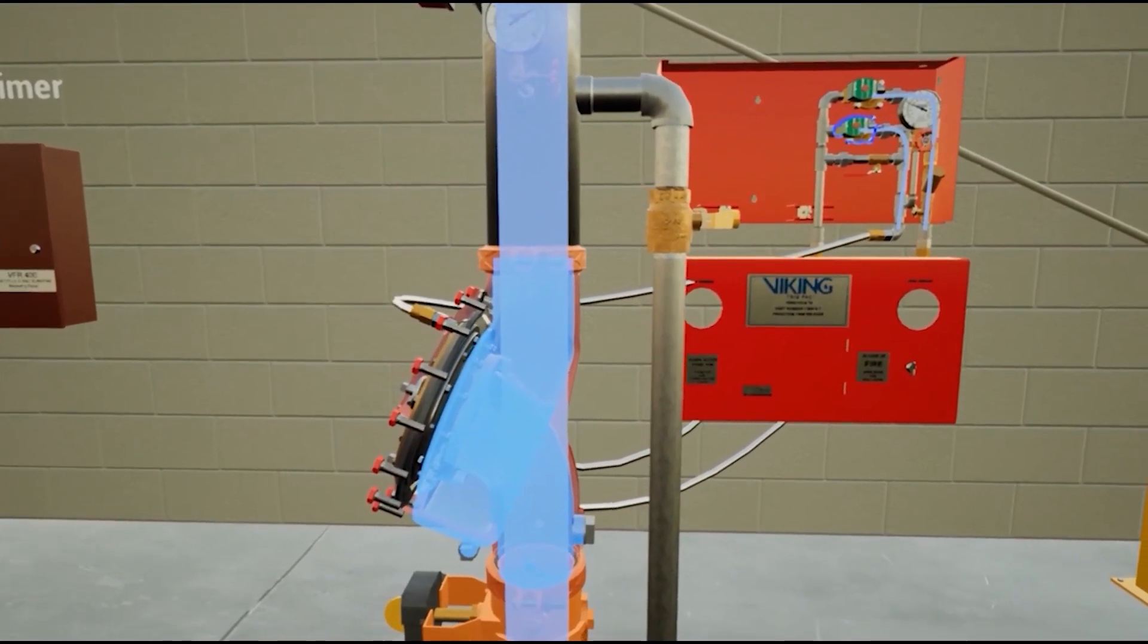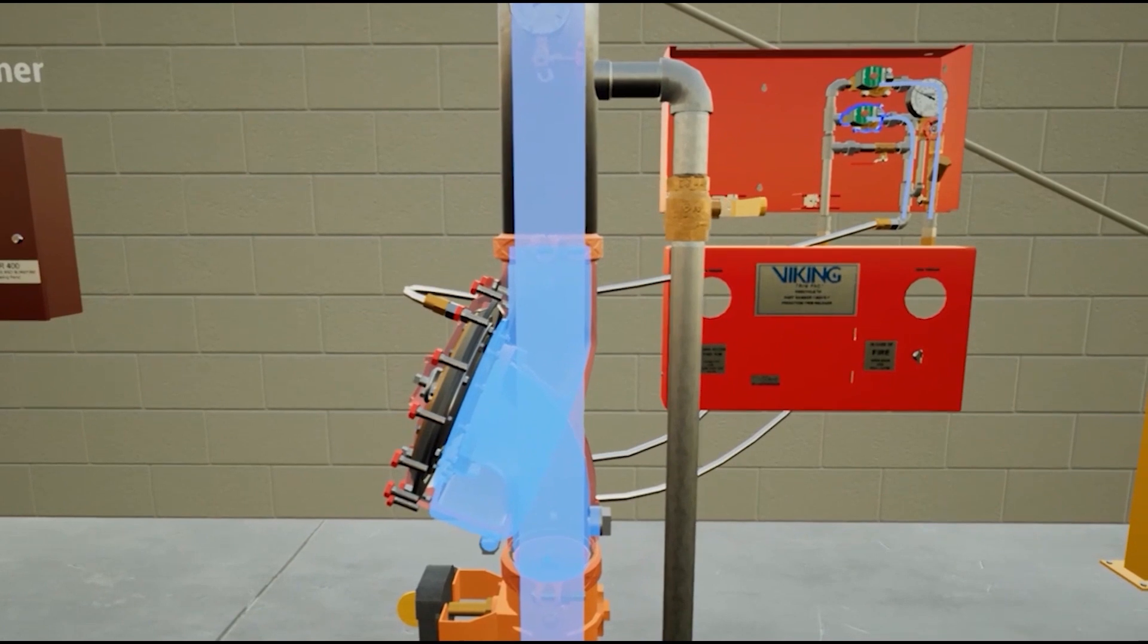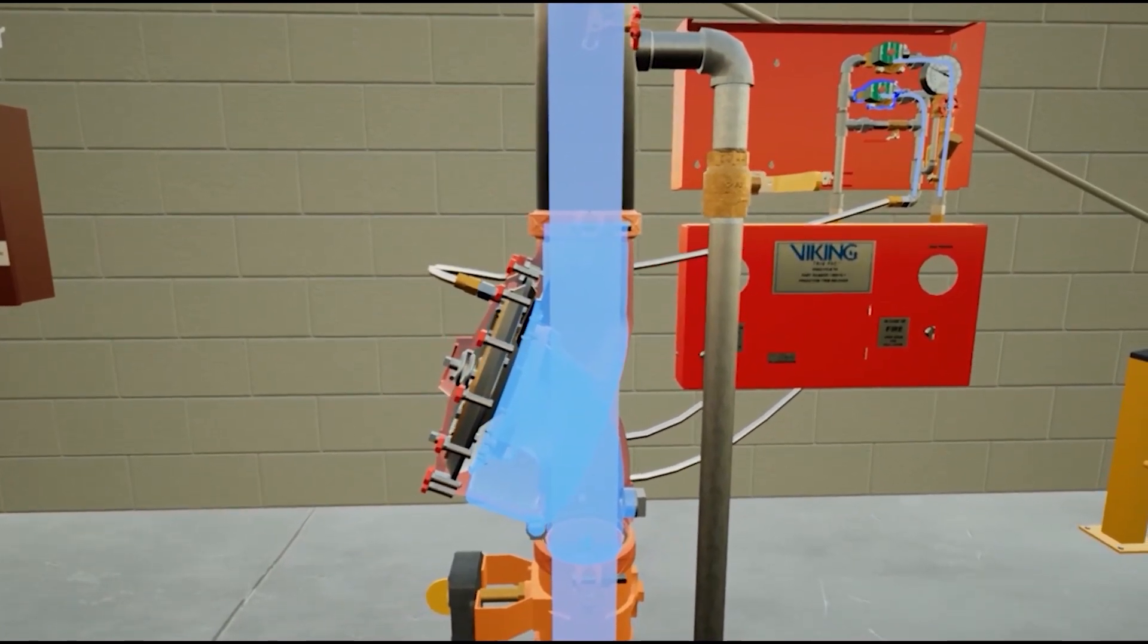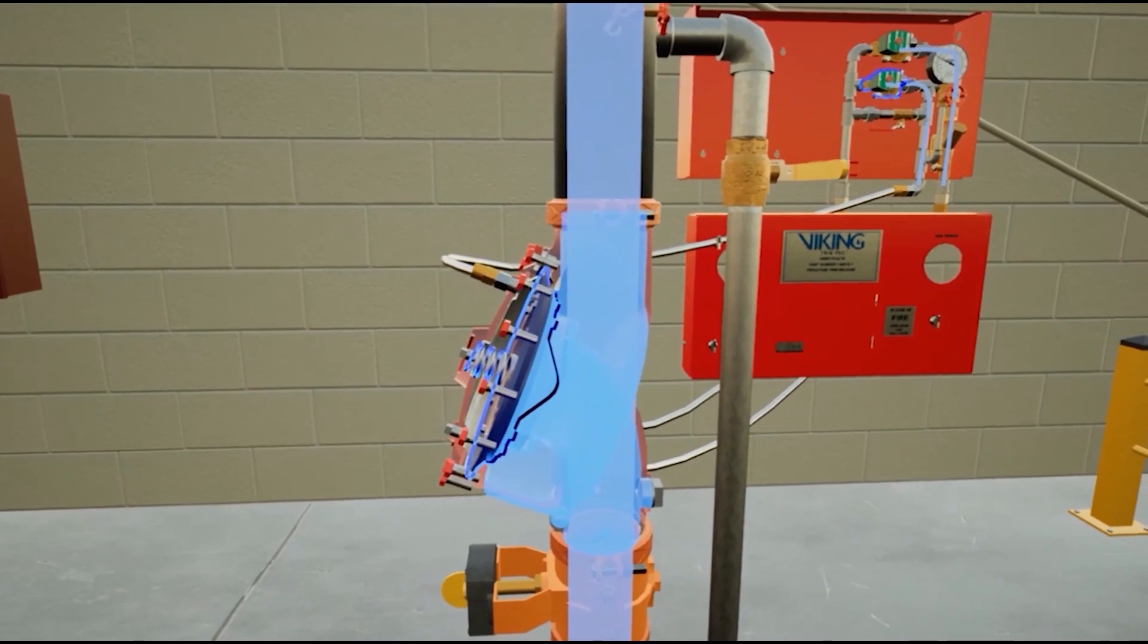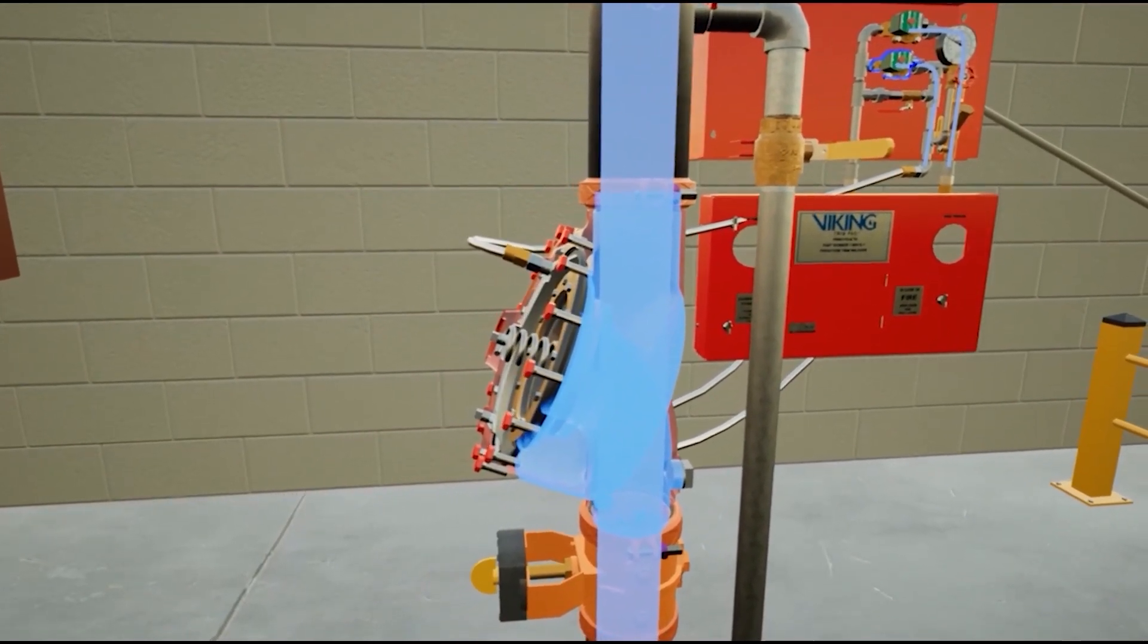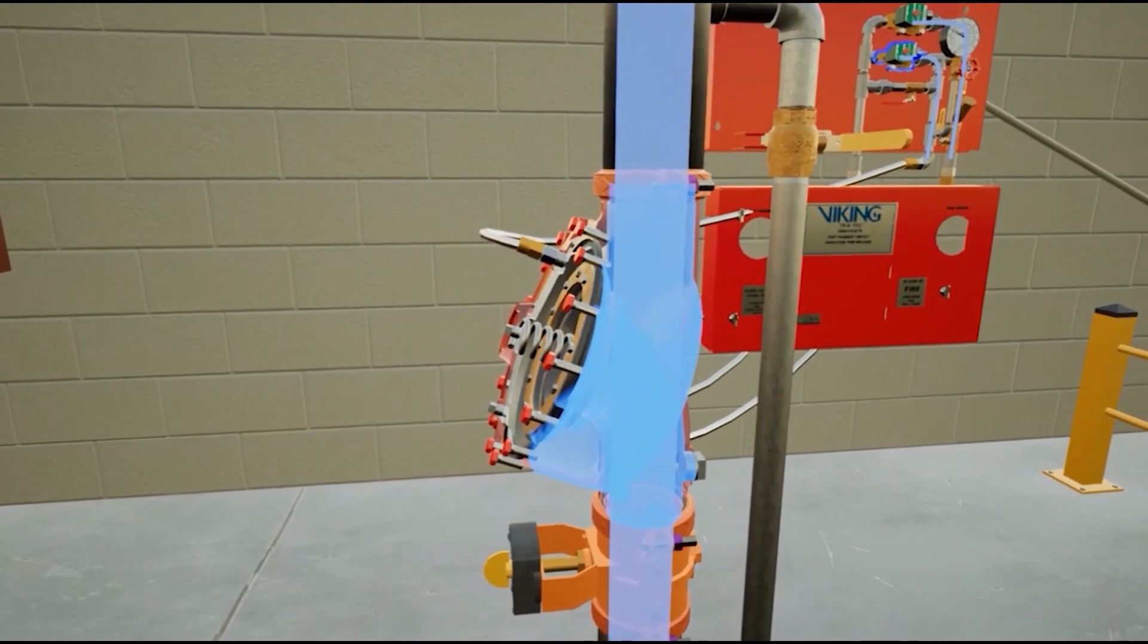Once priming pressure is established in the prime chamber, in conjunction with the spring assist within the flow control valve, the clapper will close against the seat, stopping the water flow through the system.